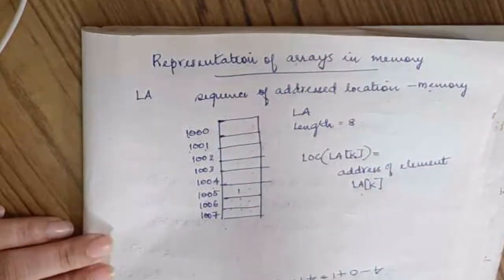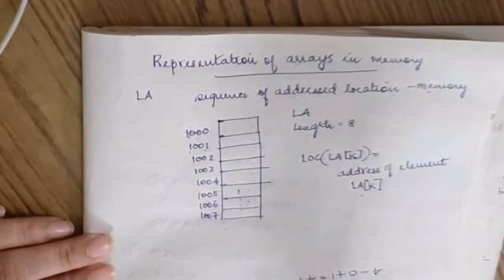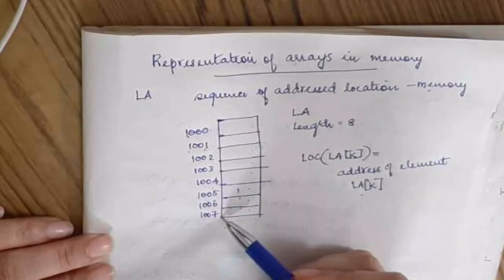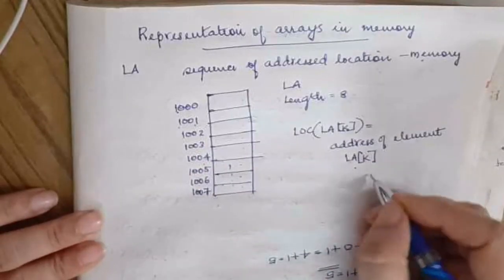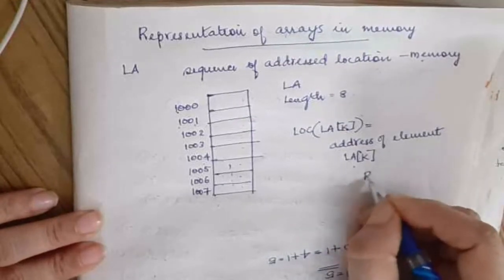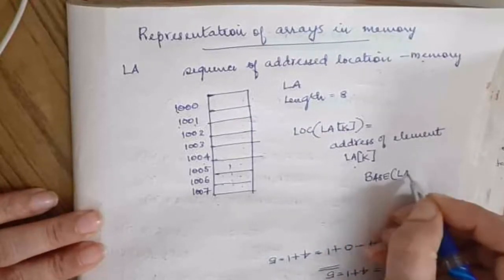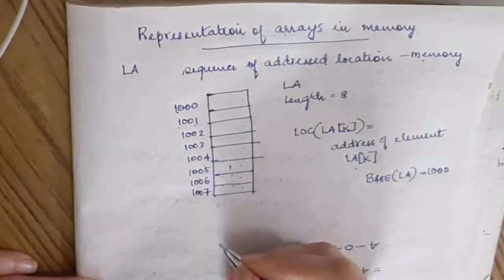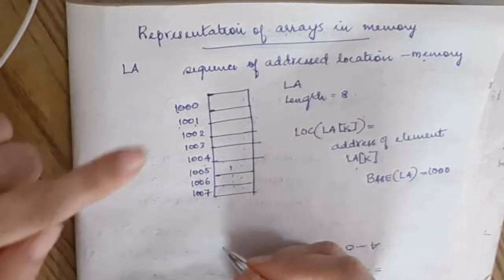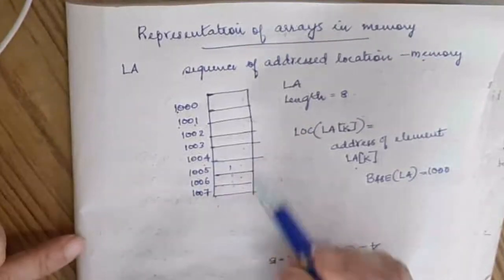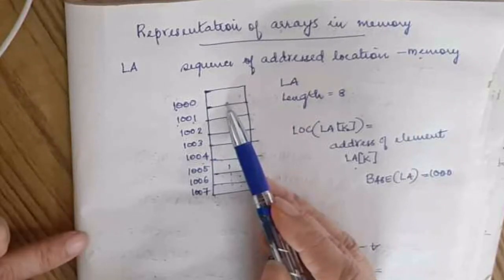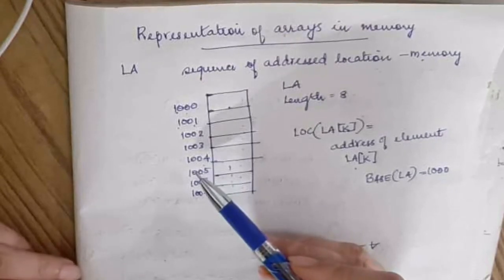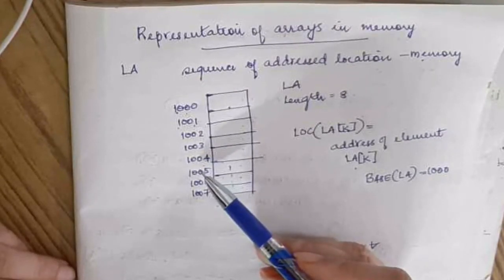If we go to the base address and add the consecutive element offset, we can find any element's location. Let the base address be Base(LA). The base address is 1000, meaning the first element is located at address 1000. Since the array is stored in consecutive positions, if you know the base address, you can calculate the location of all other elements.